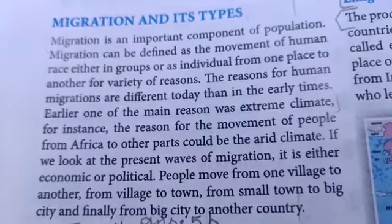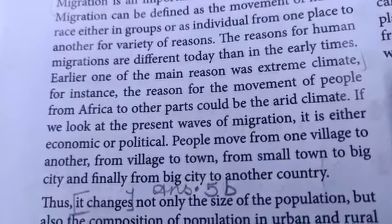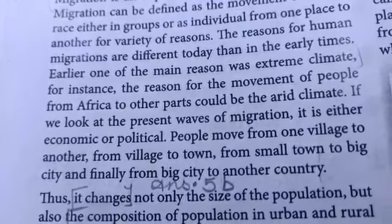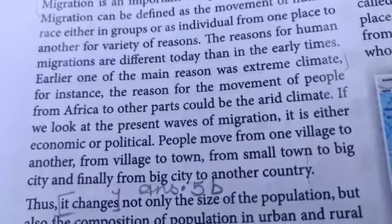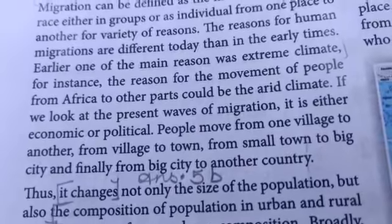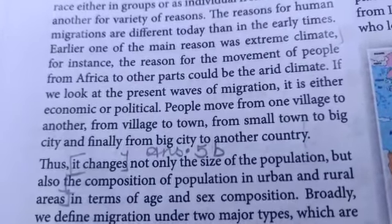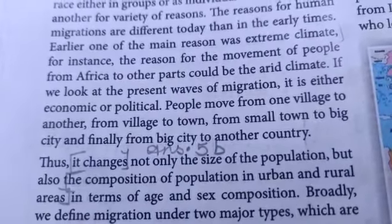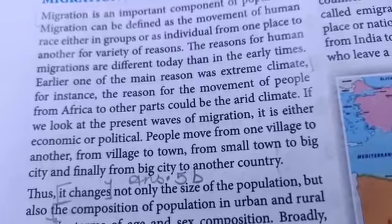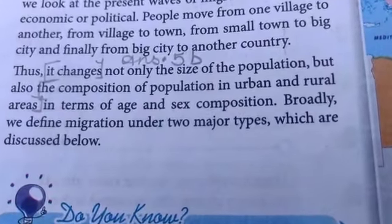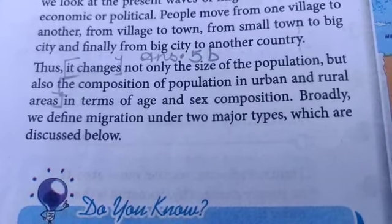The reasons for human migrations are different today than in early times. Earlier, one of the main reasons was extreme climate — for instance, the movement of people from Africa to other parts could be due to the arid, very dry and hot climate. If we look at the present waves of migration, it is either economic or political. People move from one village to another, from village to town, from small town to big city, and finally from big city to another country. Migration changes not only the size of the population but also its composition in urban and rural areas in terms of age and sex.